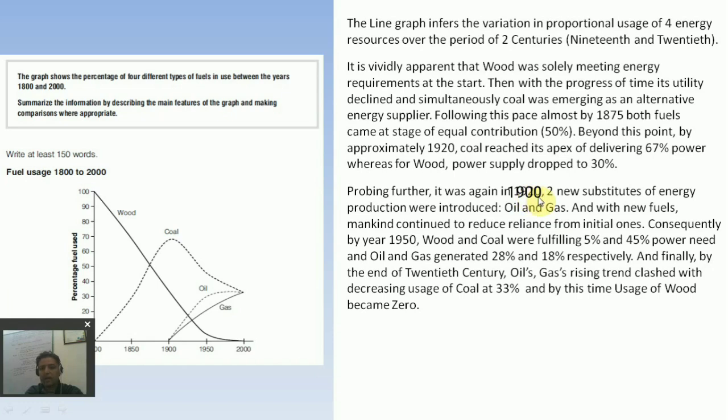In second body paragraph we will be talking about remaining time. It was in 1900 two new substitutes of energy production were introduced: oil and gas. With new fuels, mankind continued to reduce reliance from initial ones. Consequently, by year 1950 wood and coal were fulfilling 5% and 45% power need, and oil and gas generated 28% and 18% respectively.